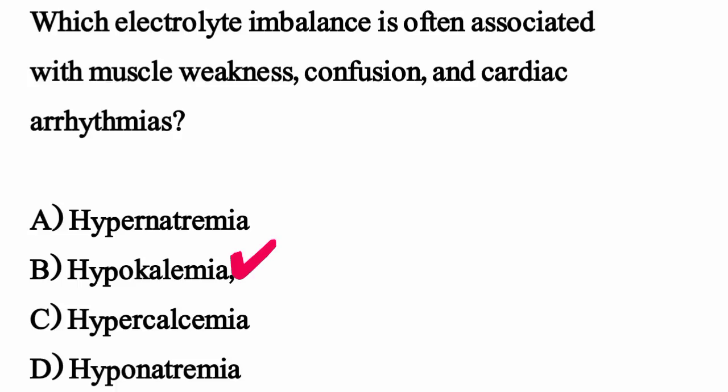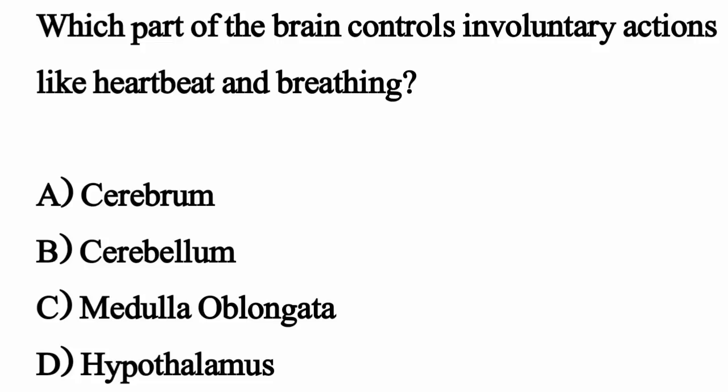Which part of the brain controls involuntary actions like heartbeat and breathing? The correct option is option C: Medulla oblongata.